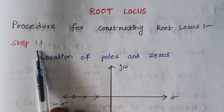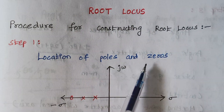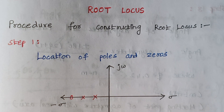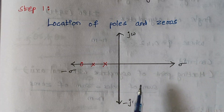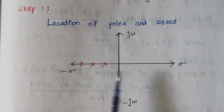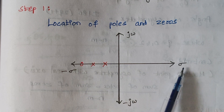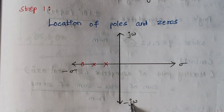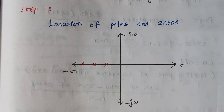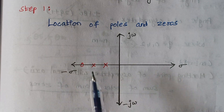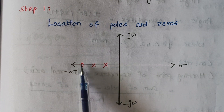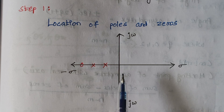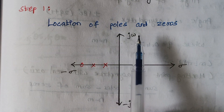Step 1 is location of poles and zeros. From the transfer function we have to calculate the values of poles and zeros and mark them on the s-plane. The x-axis stands for the real axis, with positive and negative directions, and similarly for the imaginary axis. Poles are denoted by a cross and zeros are denoted by a small circle. From the characteristic equation, denominator terms are known as poles and numerator terms are known as zeros.